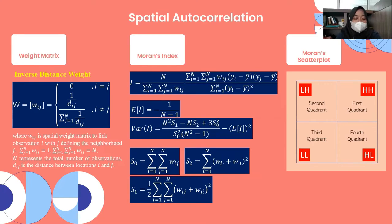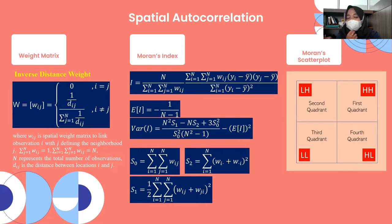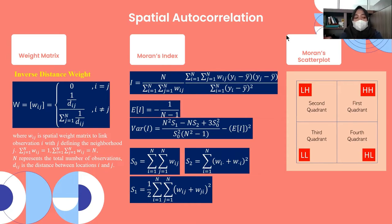Moran's Index is a correlation coefficient that measures the total spatial autocorrelation of a dataset. The value of Moran's Index ranges between minus one and one. The formula is shown on screen. After computing Moran's Index, we will plot the results in a Moran scatter plot.